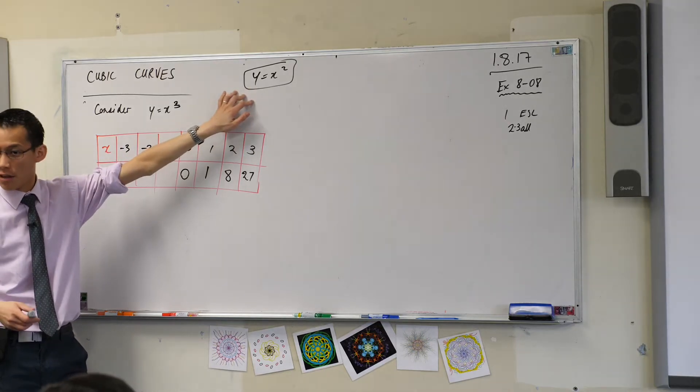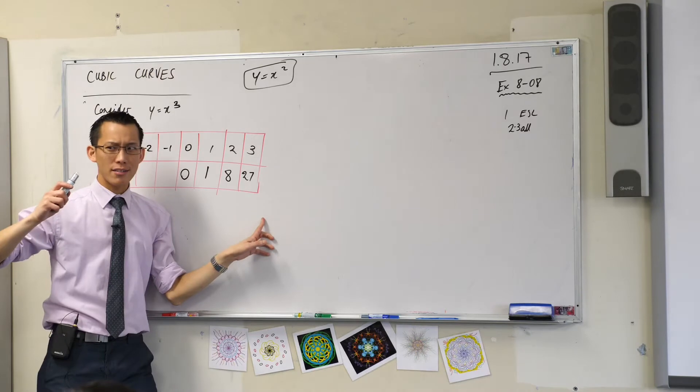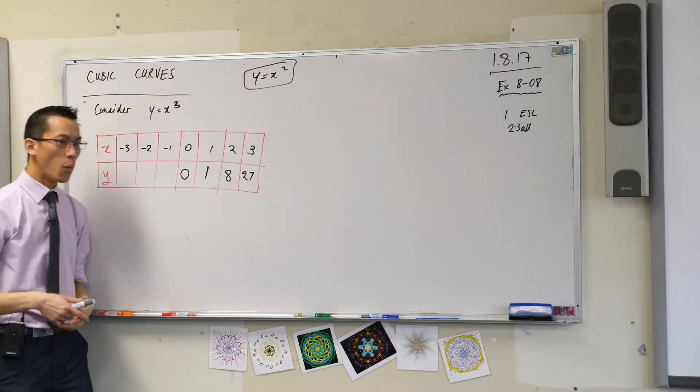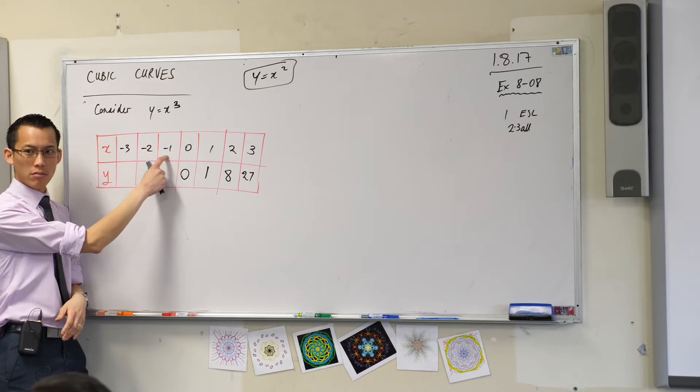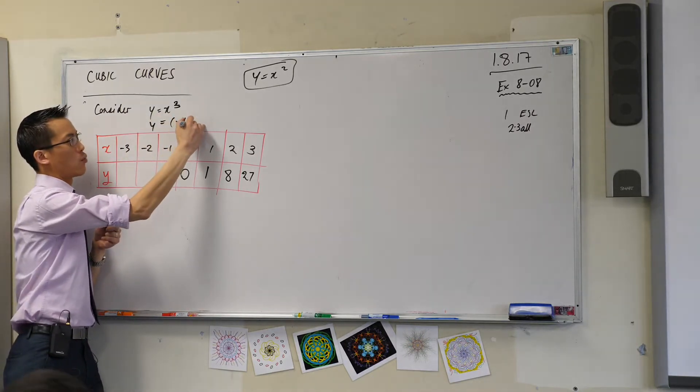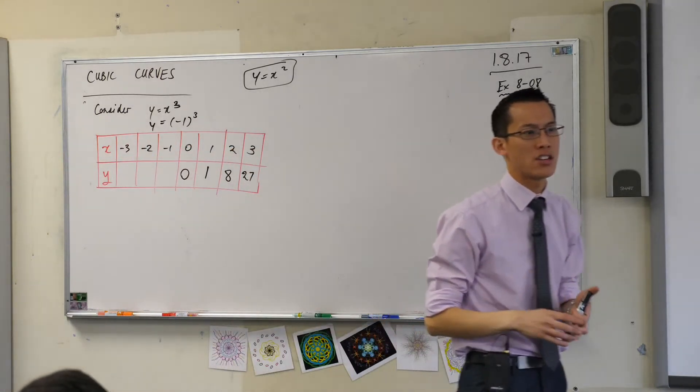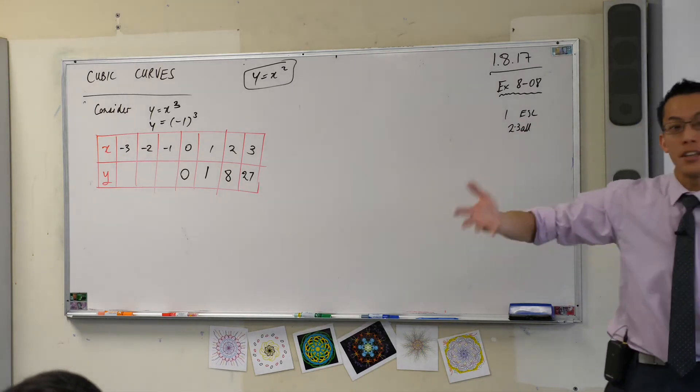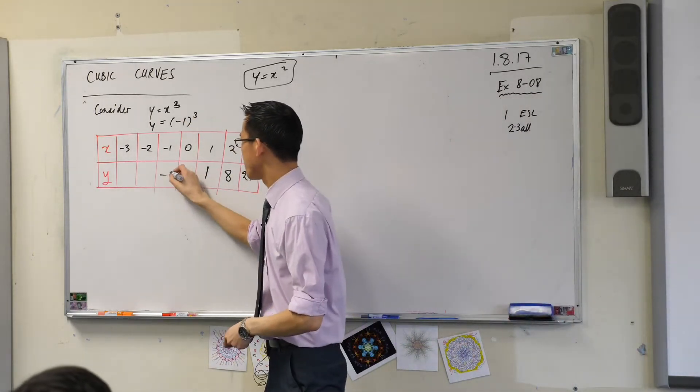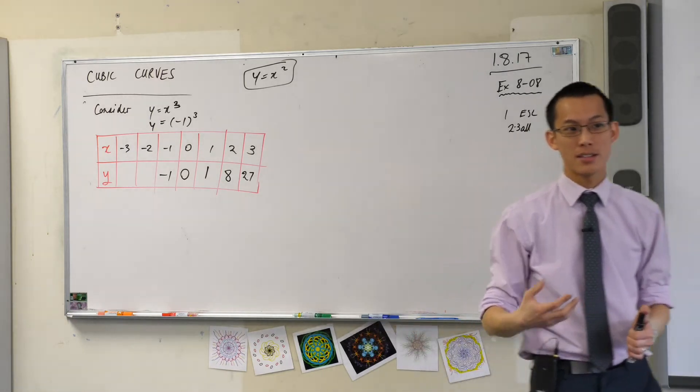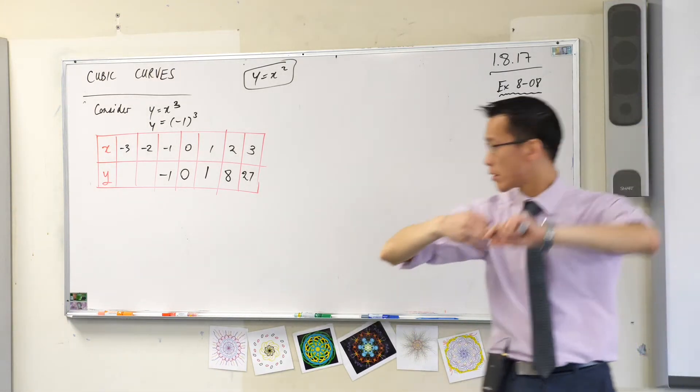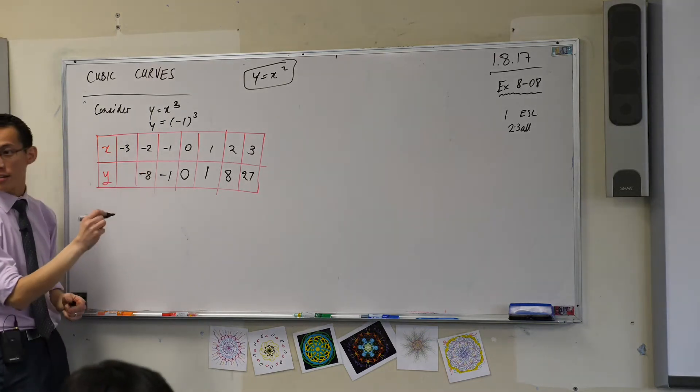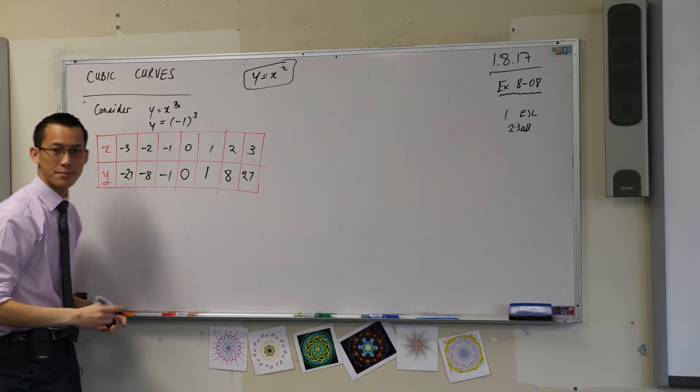Now just pause for a moment before we go on. Do you remember when we did y equals x squared? We noticed that when you tried out values over here you got exactly the same values over here. That's why this guy is symmetrical. But what happens here? When x is negative 1, y will be negative 1 cubed. What's that shorthand? Negative 1 times negative 1 times negative 1 a third time, which is negative 1. It's negative 1 because there are three negative signs. Two of them cancel and leave one behind. Negative 2 cubed is going to be negative 8. And then lastly, negative 27.